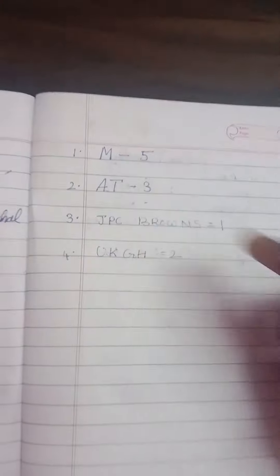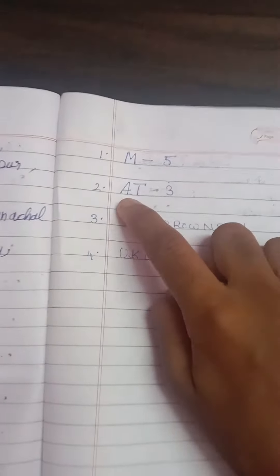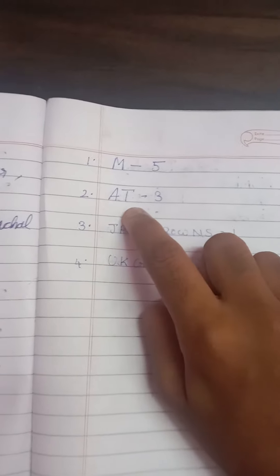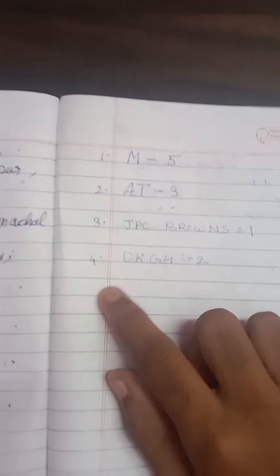You must be wondering what is this. These are the state names. There are five states with the starting letter M, and there are three states with the starting letter A and T. And there is one state with these following letters, and there are two states with these following letters.